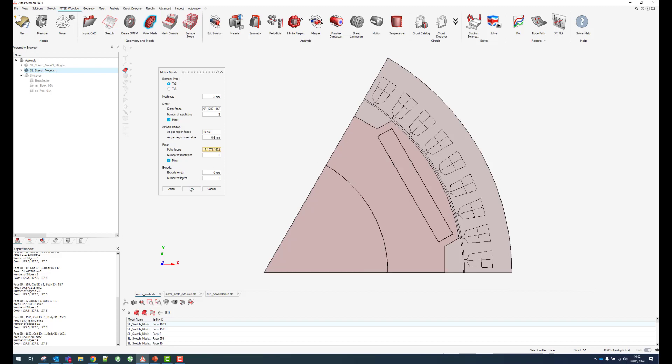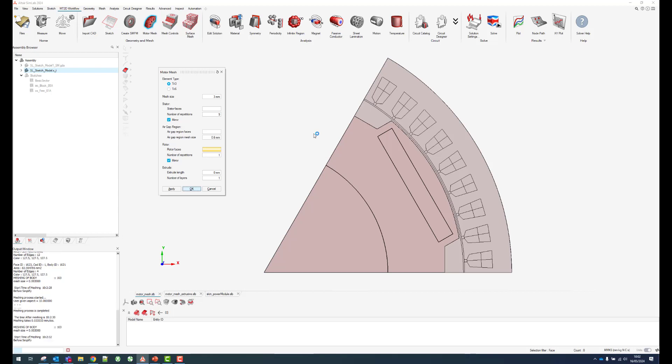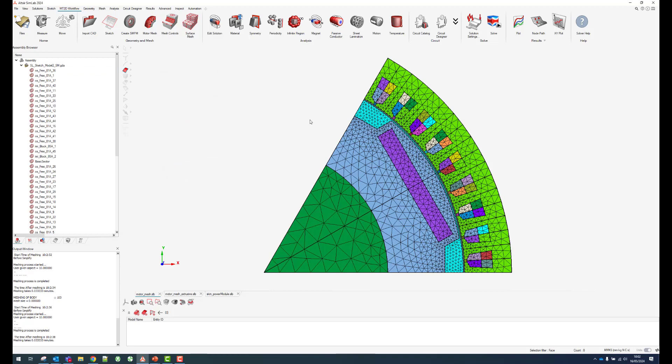Then rotor faces, these last ones, and we do have a mirror to make sure it's symmetric and periodic. Here we can choose to extrude it or not. If we say no, then we can see very quickly it's going to run and produce our very symmetric and regular mesh for this 2D application.